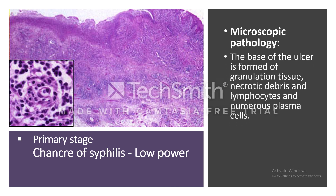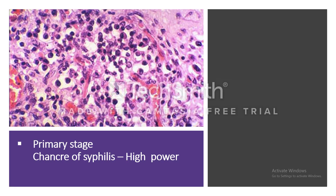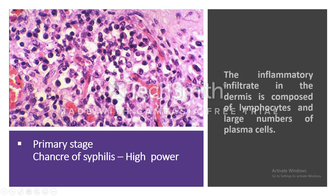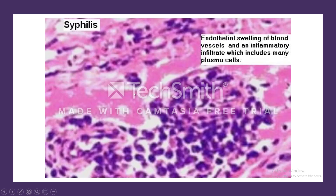The base of the ulcer is formed of granulation tissue, necrotic debris, lymphocytes, and numerous plasma cells. Secondary pyogenic infection may also occur. On high power view, the infiltrate is formed mainly of plasma cells. The endothelial swelling of blood vessels with surrounding inflammatory infiltrate is clearly visible, with the vessel nearly obliterated — a beautiful example of obliterative endarteritis.